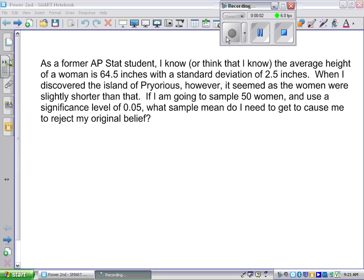As a former AP stat student, I know, or think I know, that the average height of a woman is 64.5 inches with standard deviation 2.5 inches. When I discovered my island of Prioreus, it appeared as the women there might be slightly shorter than that. If I'm going to sample 50 women and use a significance level of 5%, what sample mean do I need to get to cause me to reject my original belief? So let's draw what we've got.